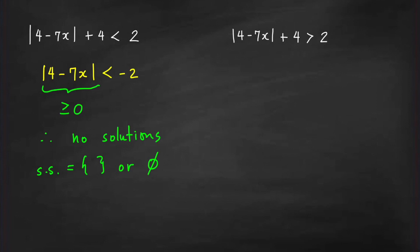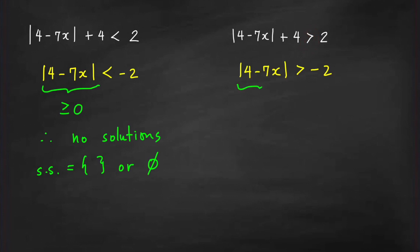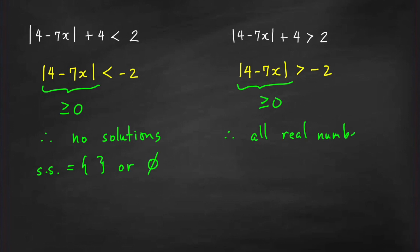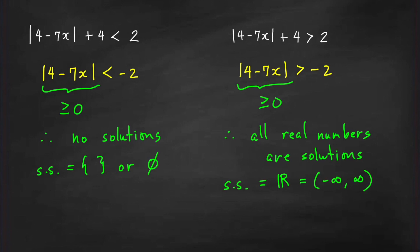For the second inequality, moving 4 to the right-hand side gives absolute value of 4 minus 7x greater than negative 2. We know the left-hand side is always greater than or equal to 0, so it is always true that its value is greater than negative 2 for all x. Therefore, all real numbers are solutions. The solution set is the set of all real numbers, or in interval notation, negative infinity to positive infinity.